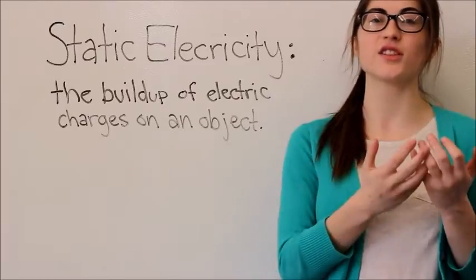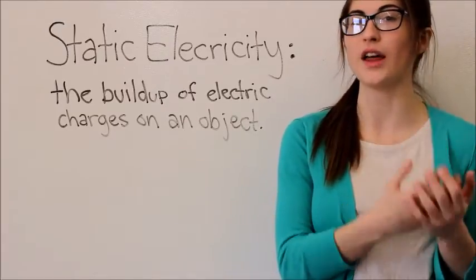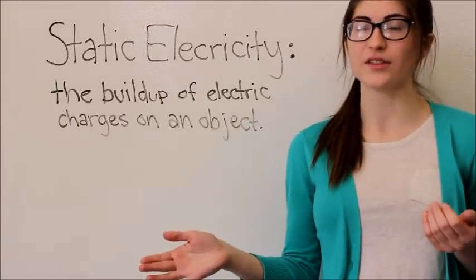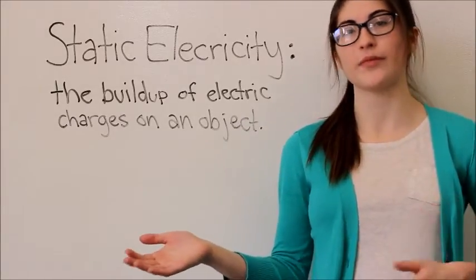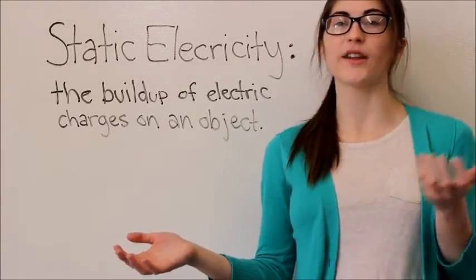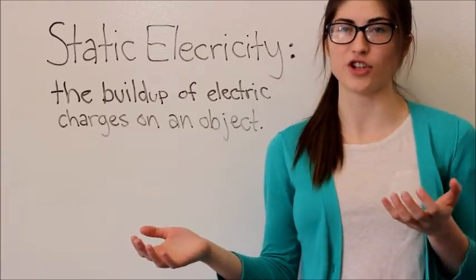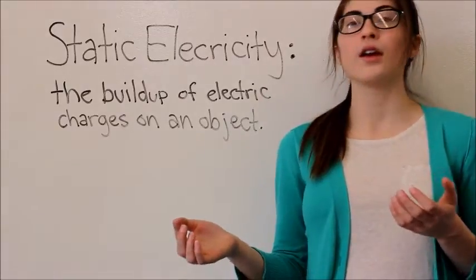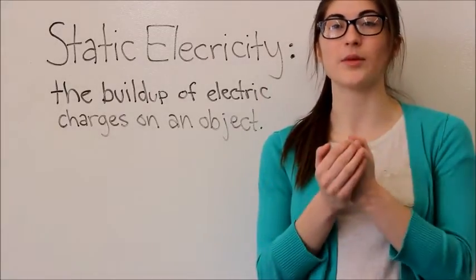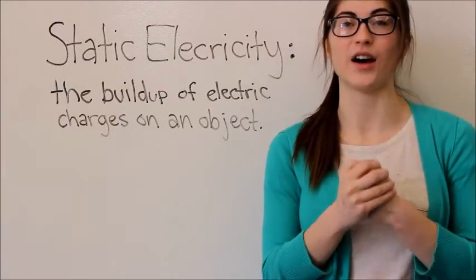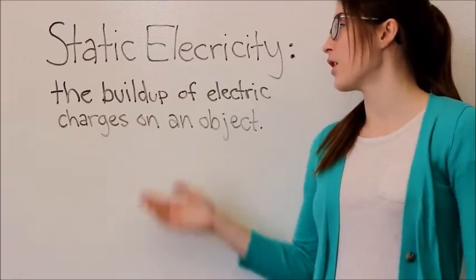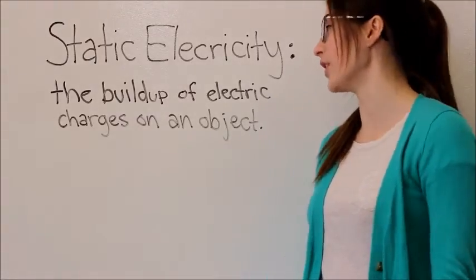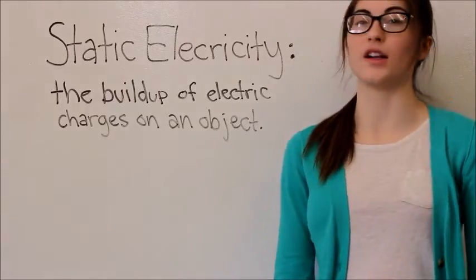Because all the electrons go from one object to another, the object that's left doesn't have any electrons left. So it has a positive charge. And the object that took all the electrons has a negative charge. Because electrons are negatively charged. Because of this, these two objects attract because they have unlike charges. So, one more time, static electricity is the buildup of electric charges on an object.